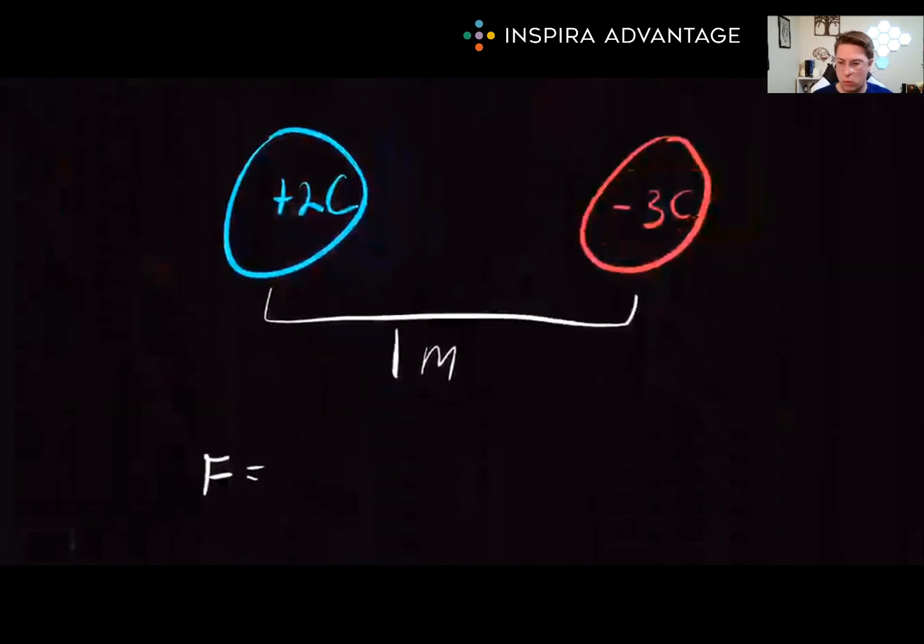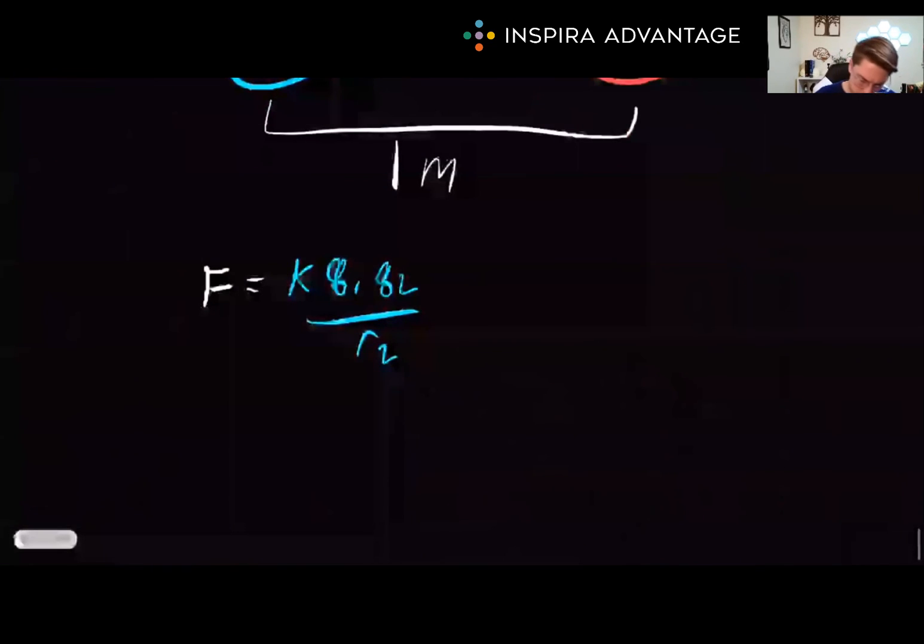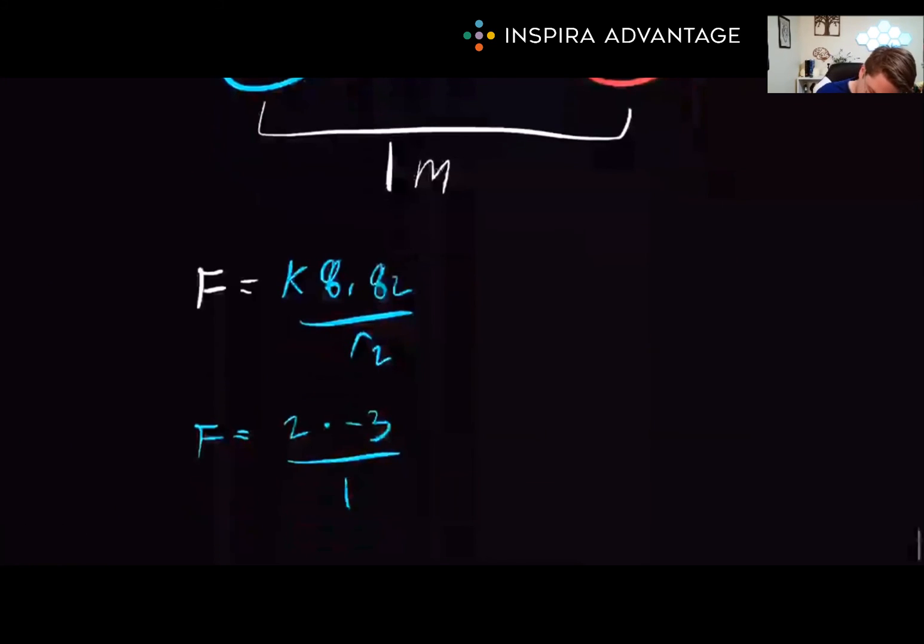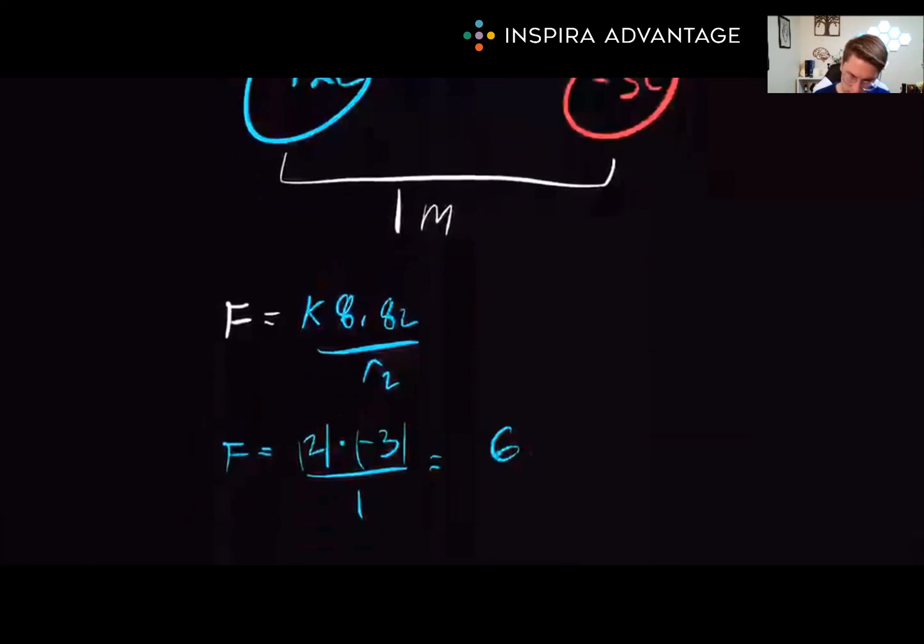Well, let's solve this. What was our force equation? We knew that force equals kq1q2 over r squared. We're just going to leave k because we don't want to deal with that number. So we're going to say force equals two times negative three divided by one. And these are all absolute valued. So this is going to equal six newtons.